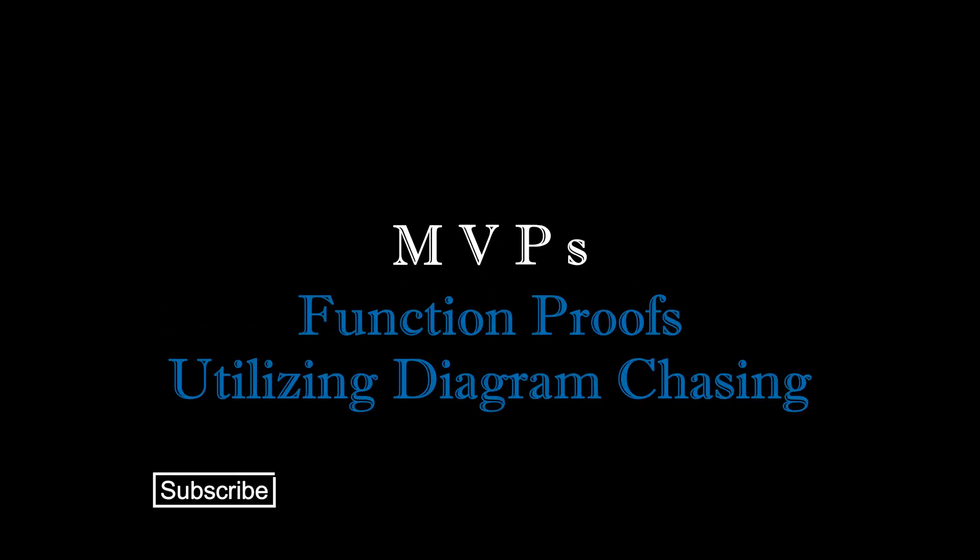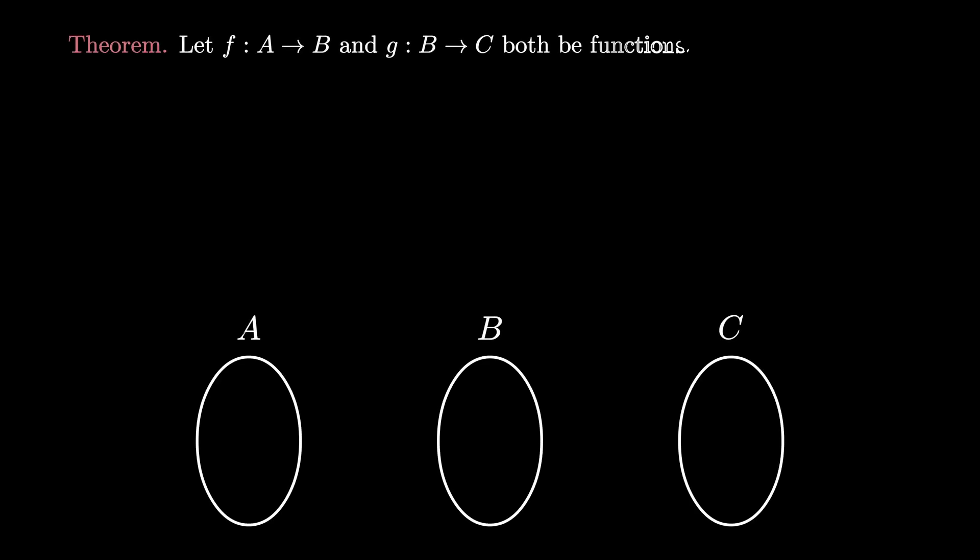Let's learn how to diagram chase when proving facts about functions. Suppose we start with three sets A, B, and C. If we imagine that F is a function from A to B and G is a function from B to C,